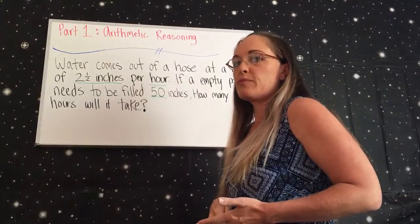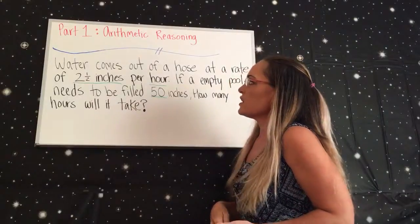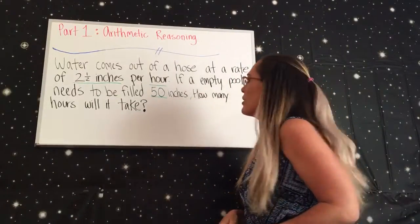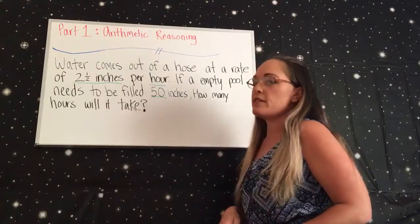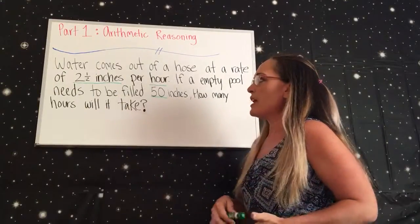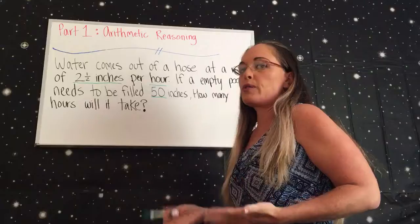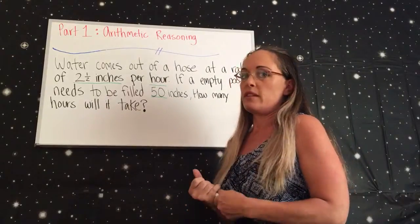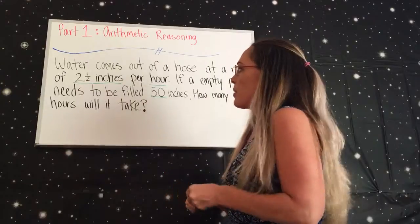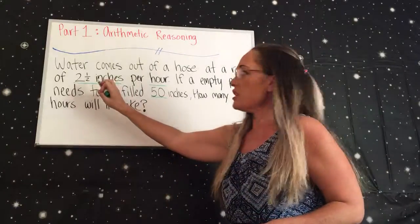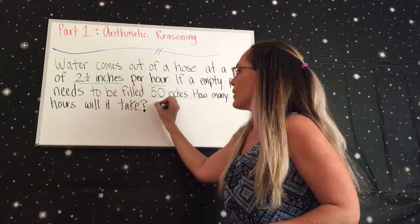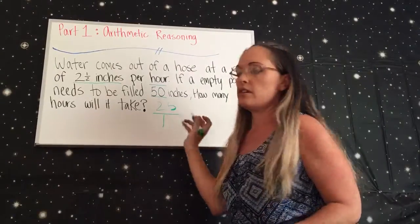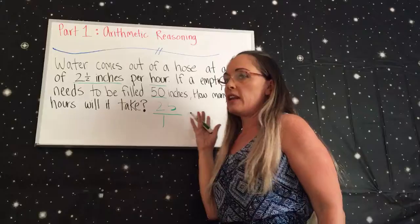We're going to do another cross multiplying problem. Water comes out of a hose at a rate of two and a half inches per hour. If an empty pool needs to be filled 50 inches, how many hours will it take? You always want to think cross multiplying because that's the best way — and sometimes the only way — to answer the problem. You have two and a half inches per hour, so right away you should think: I have my first fraction.